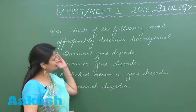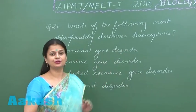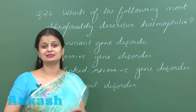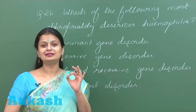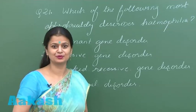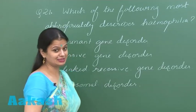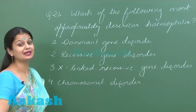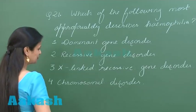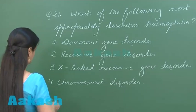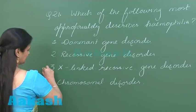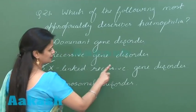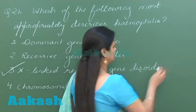We have to look for the right option for haemophilia. Haemophilia is an X-linked recessive disorder — the gene for haemophilia is present on the X chromosome. So the right option here is option number 3, that is X-linked recessive gene disorder.